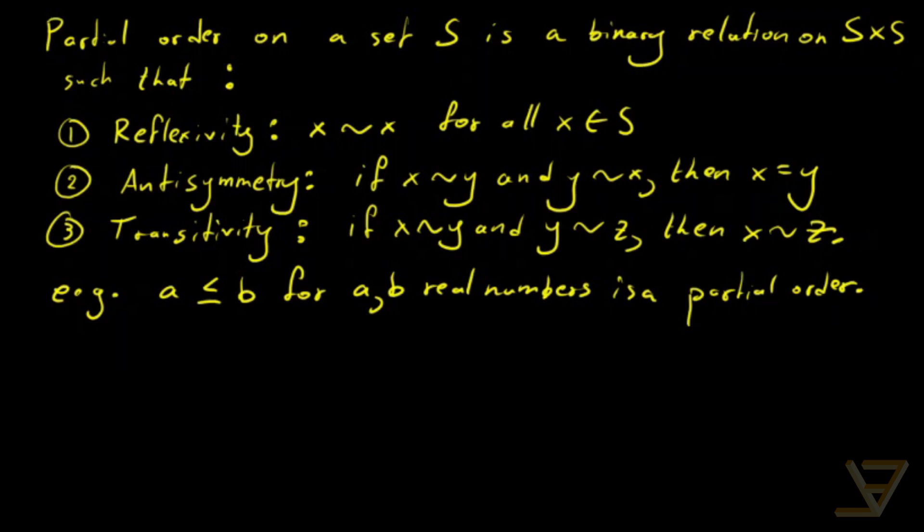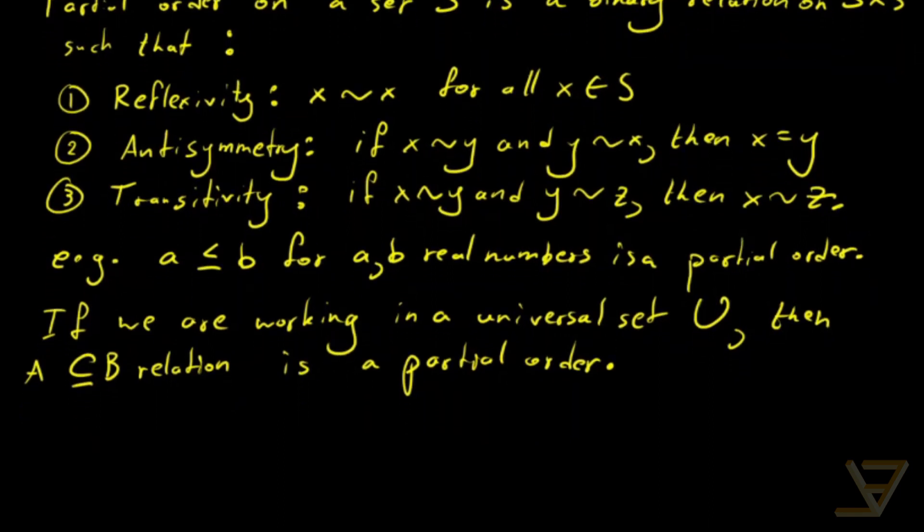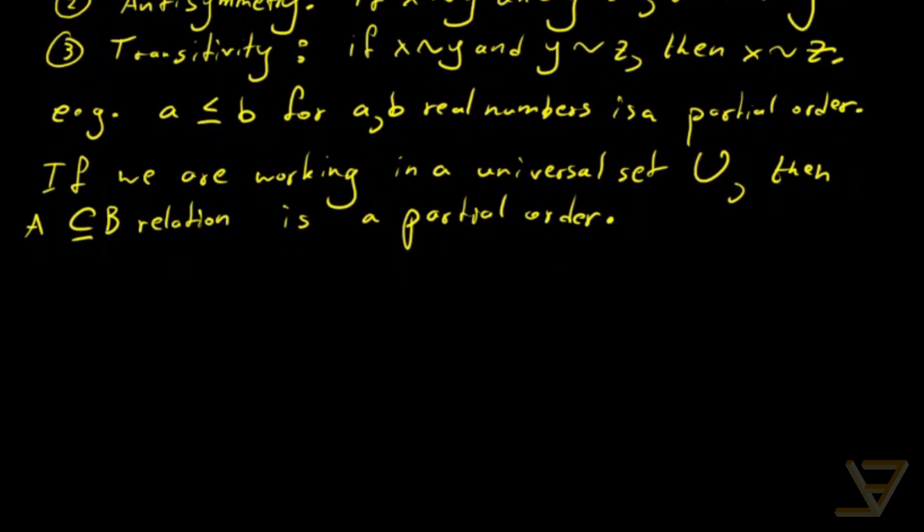What we are trying to prove here, that is the goal of the video, is to show that if we are working in a universal set, that means that all the sets that we are working with are subsets of this universal set U, then the subset relation, like A subset B, is a partial order. This might seem a bit abstract, but it's actually a very powerful idea and I'll mention why after we've proven the fact that it is a partial order.